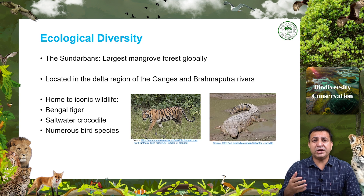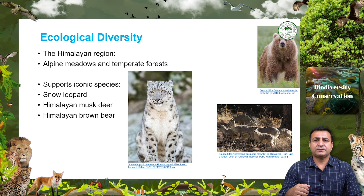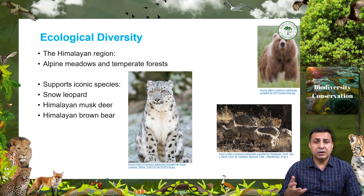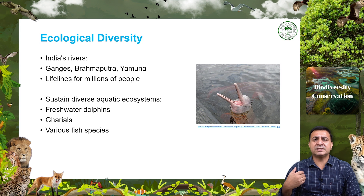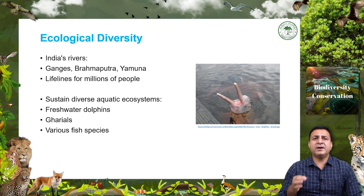The Sundarbans, located in the delta region of the Ganges and Brahmaputra Rivers, is the largest mangrove forest globally and is home to the Bengal tiger, saltwater crocodiles, and numerous bird species. The Himalayan region, with its alpine meadows and temperate forests, sports iconic species like the snow leopard, Himalayan musk deer, and Himalayan brown bear. Indian rivers such as the Ganges, Brahmaputra, and Yamuna sustain diverse aquatic ecosystems including freshwater dolphins, gharials, and various fish species.